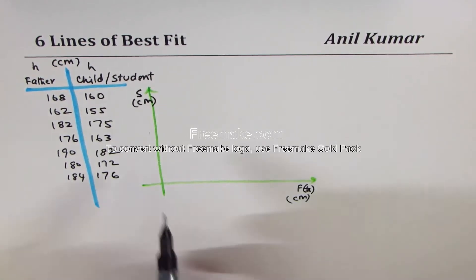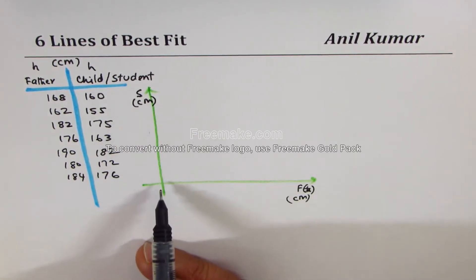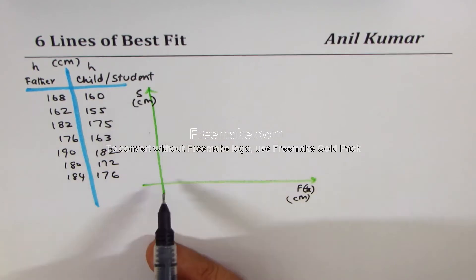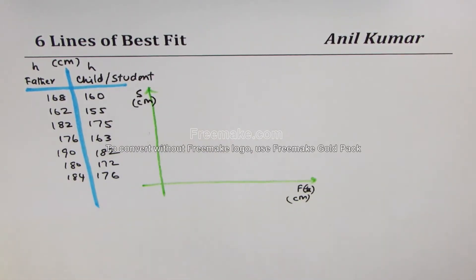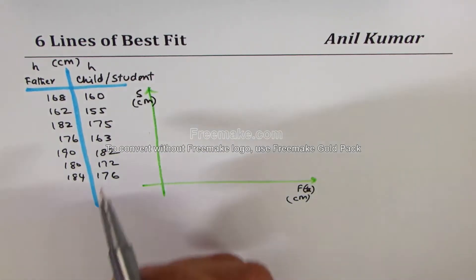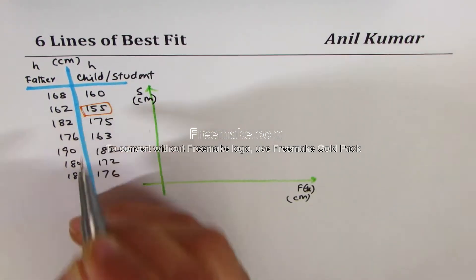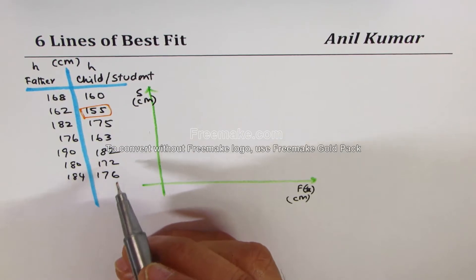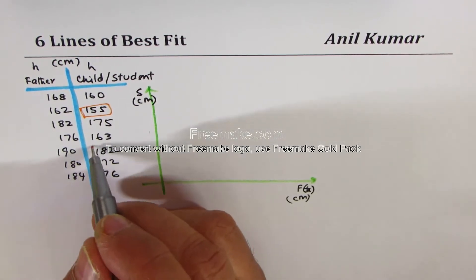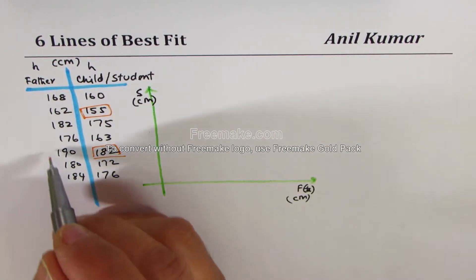Now we have to decide about the scale — this is very important. We look at the minimum and maximum values. For the student data, 155 is the minimum and 182 is the maximum.